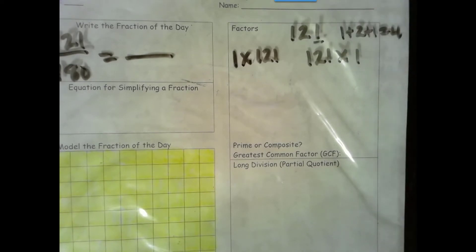We try 9. 9 has the same rule as 3. We add the digits together and get 4. 4 is not a multiple of 9, so 9 is not a factor.